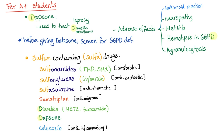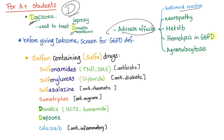Dapsone is used to treat leprosy and dermatitis herpetiformis, which is associated with celiac disease. Adverse effects of dapsone include leukemoid reaction, neuropathy, methemoglobinemia, hemolysis in G6PD deficiency, and agranulocytosis — which is deficiency of granulocytes (neutrophils, basophils, eosinophils). Before giving dapsone, screen for G6PD deficiency.